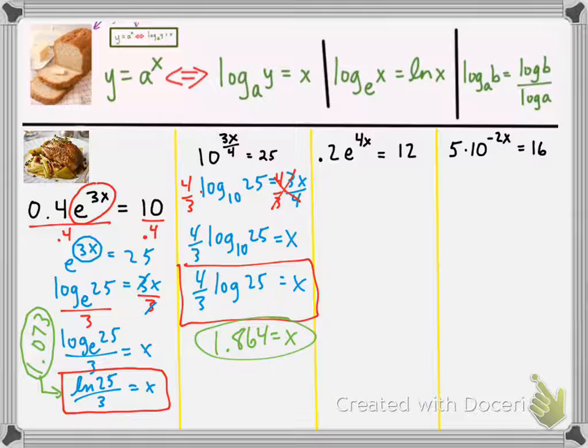Okay. So, problem number three. I would urge you to try these last two problems by pausing the video. We have the expression that contains the variable is not isolated. So, we're going to go ahead and isolate it by dividing both sides by 0.2.